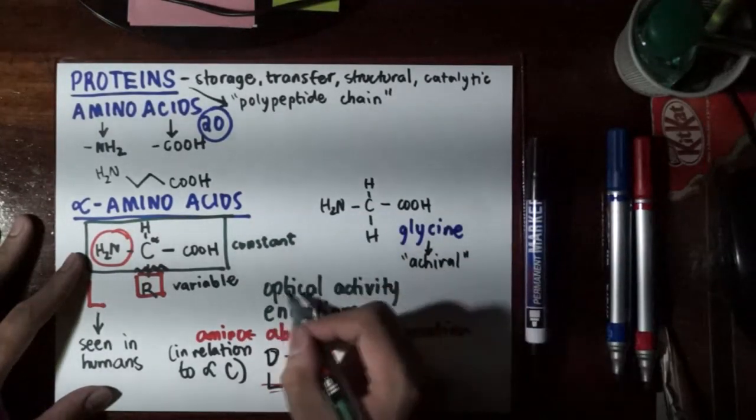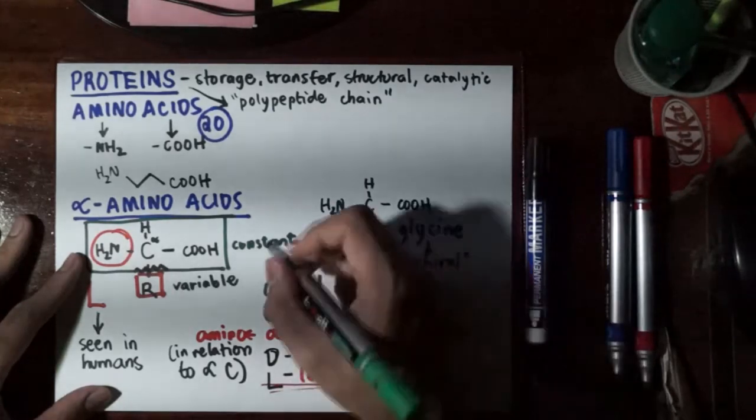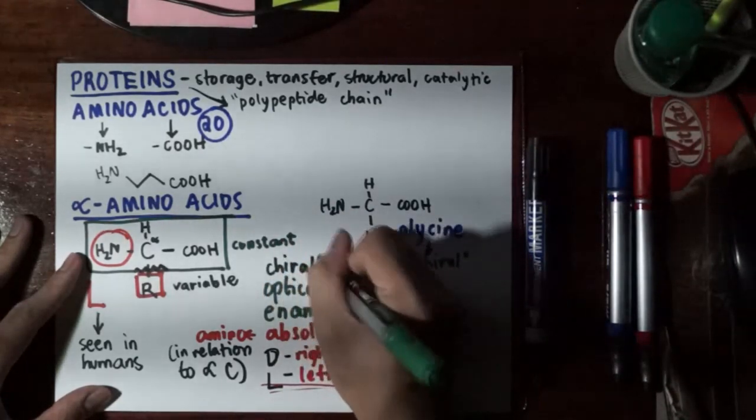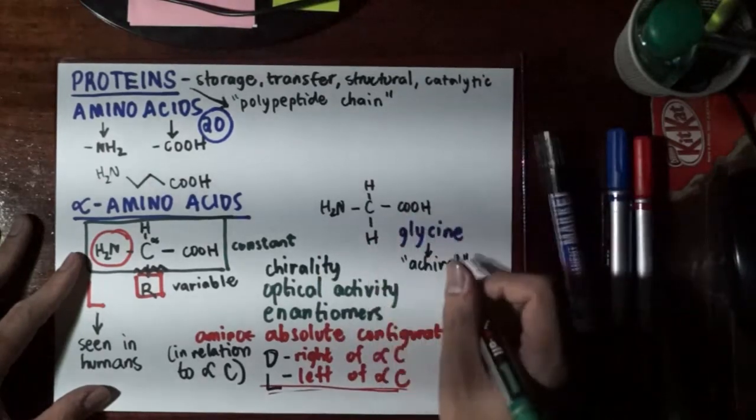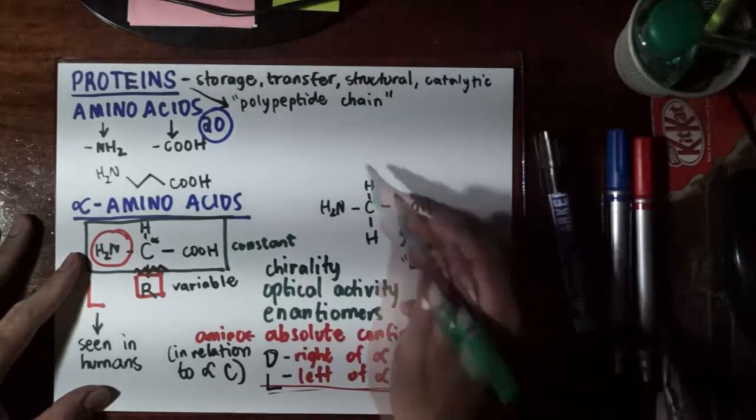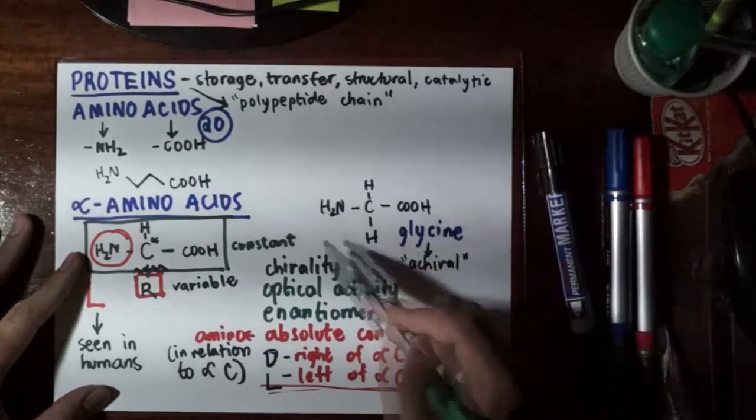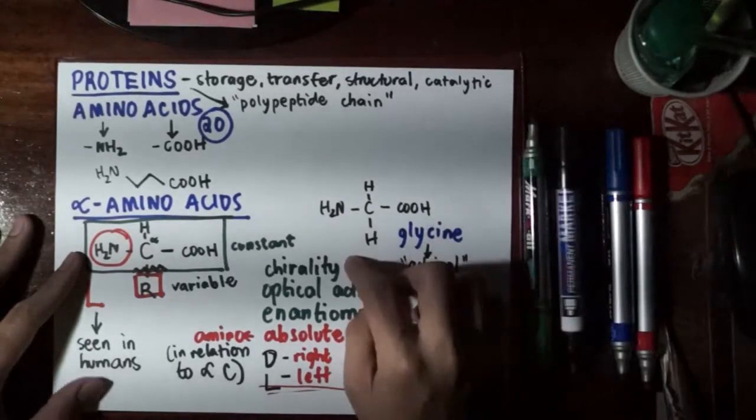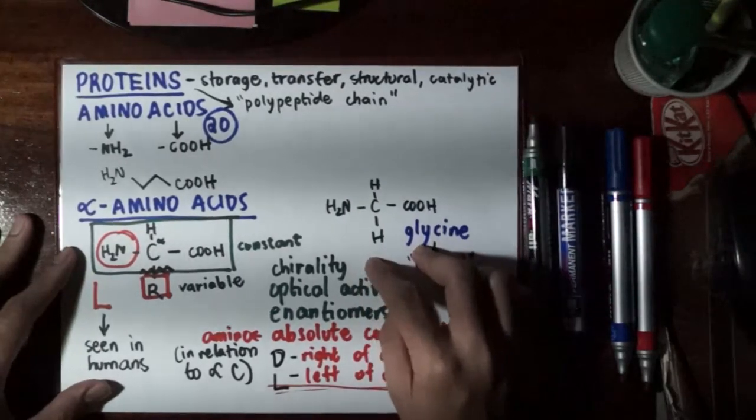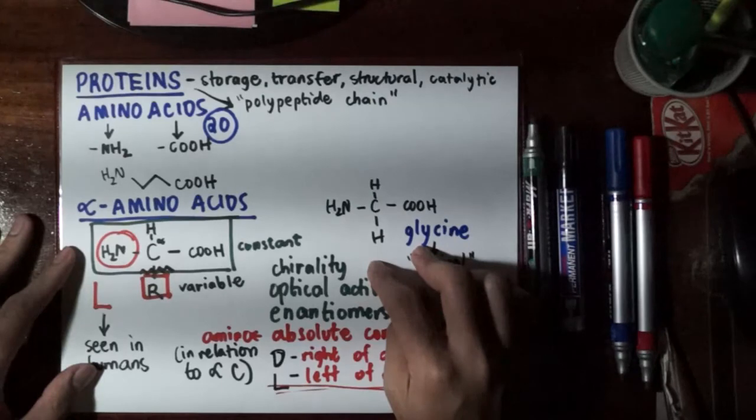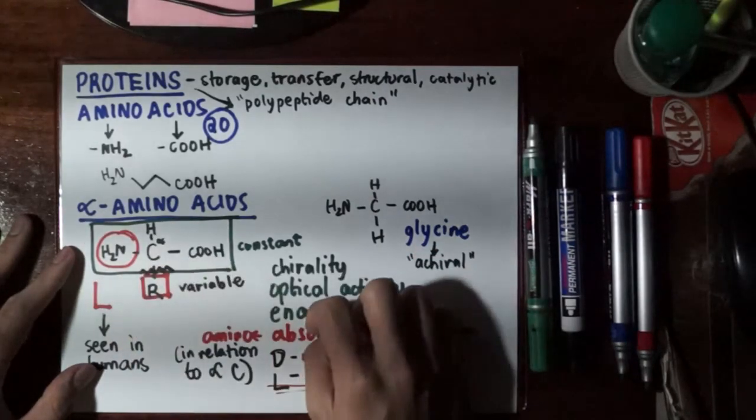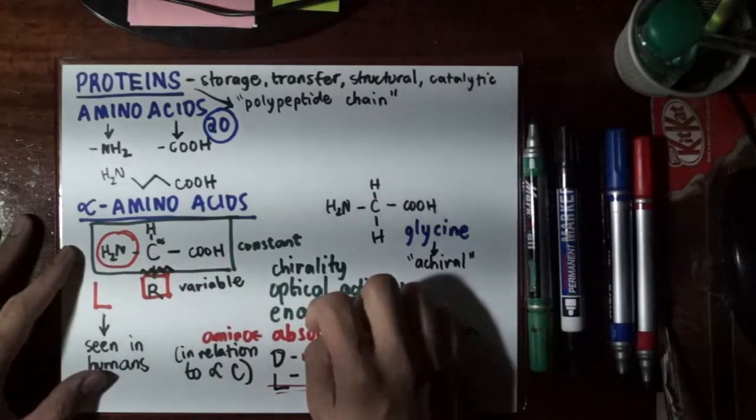So glycine is the only one which we say is achiral because another term for enantiomerism or optical activity is chirality or handedness. We say that glycine is the only achiral amino acid of the 20, and also the simplest since the R group is also hydrogen. That's it for the 20 L alpha amino acids that are important for biochemistry.